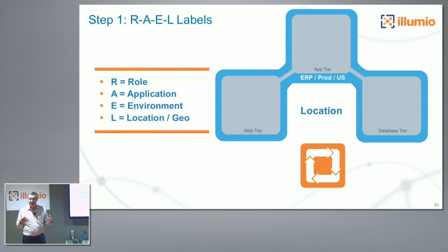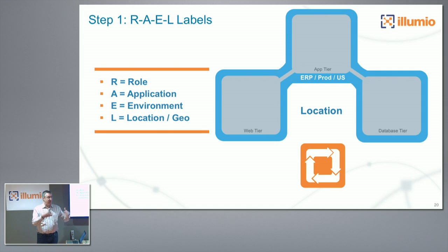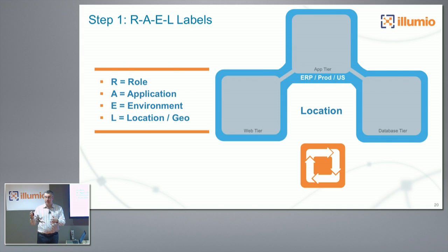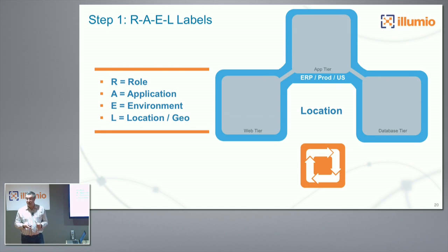How you get these labels: often if people are following a DevOps model, you already have some of these labels in your Chef, Puppet, or Ansible repositories. Other people have CMDBs that contain some of this data. Some people don't have it, and then we have to discover it — and that's where Illumination also helps the process.